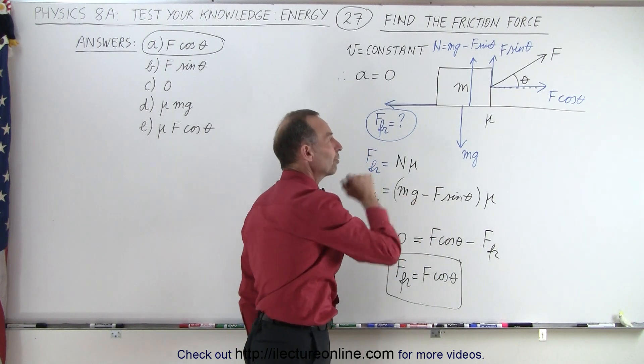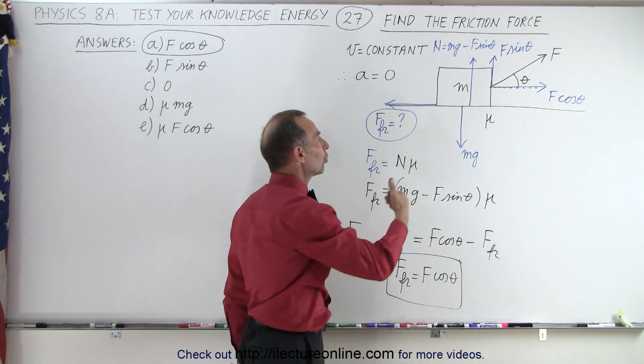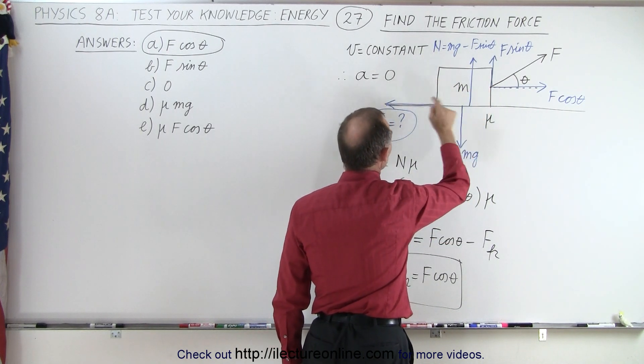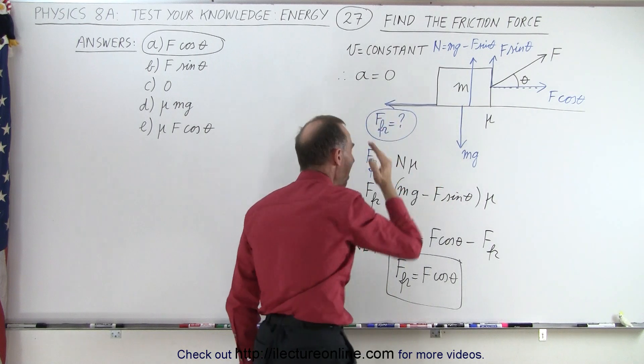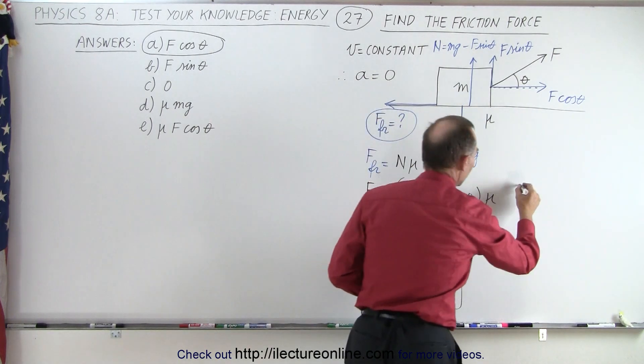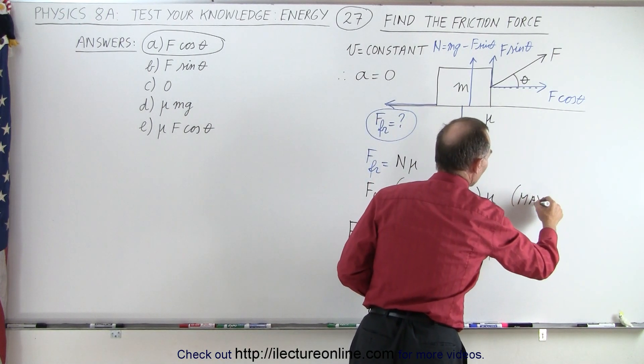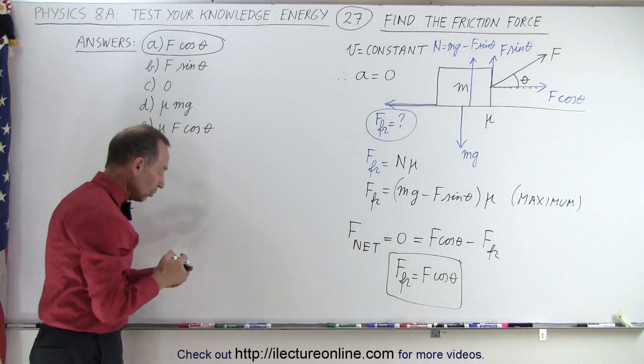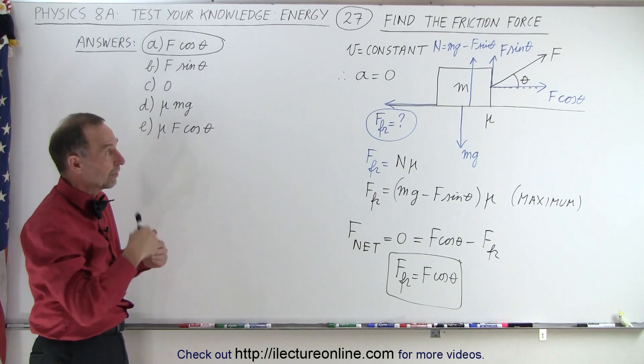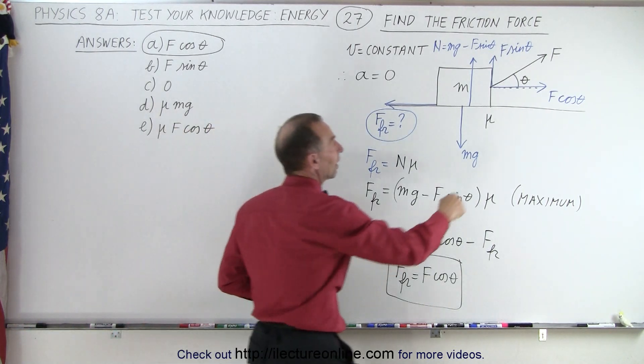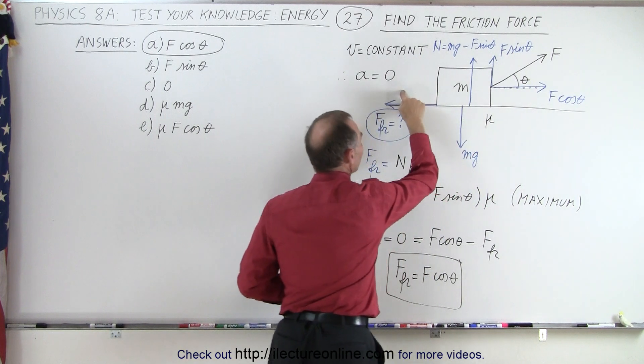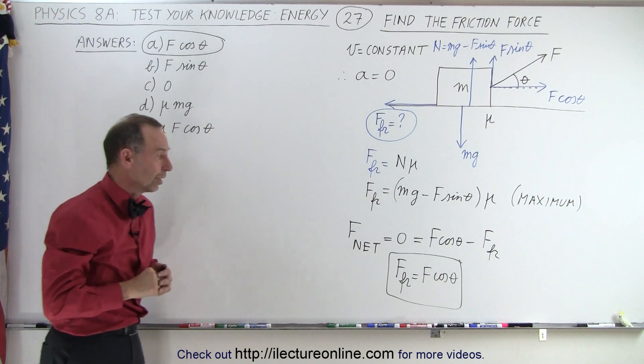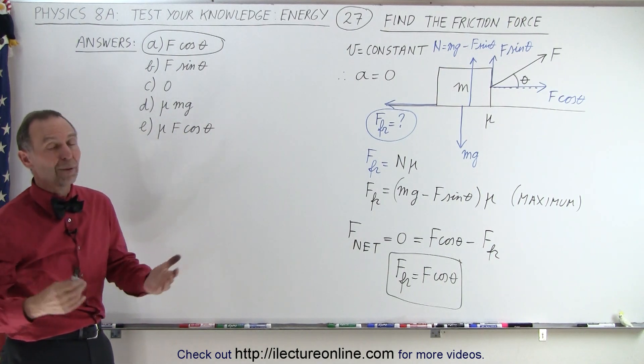This is what we call the maximum friction force. If the total normal force which is the maximum mg minus F sine theta, that maximum times mu will give you the maximum friction force but not the actual friction force, it could be far less. And so therefore be careful of the difference. You always know that because of Newton's third law, for action there's an equal and opposite reaction. The greater F cosine theta, the greater the friction force, and you note that they're going to be proportional to, simply in the opposite direction of one another, and that is how it's done.